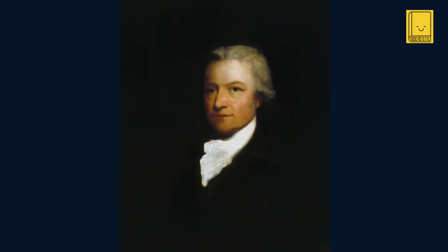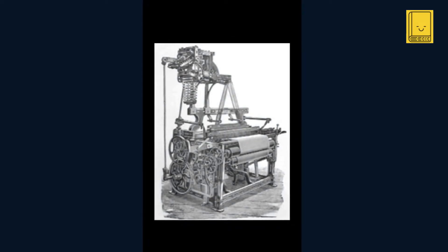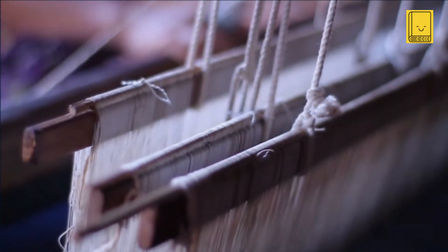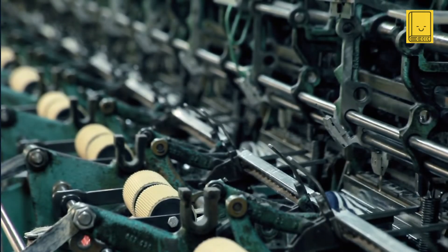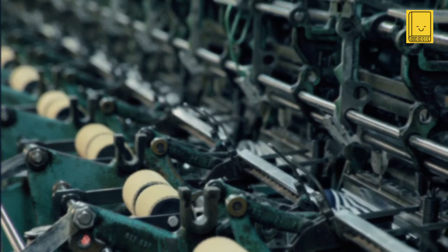In the year 1785, Edmund Cartwright, a name less familiar but equally important, introduced the power loom, an ingenious machine that automated the weaving process, and in doing so, spun a new thread in the fabric of industrial history. In the bustling textile mills of the 18th century, the introduction of the power loom represented a seismic shift from manual labor to mechanized production. Building upon the steam power advancements championed by James Watt, the power loom stood as a testament to human ingenuity and its capacity to reshape the world.